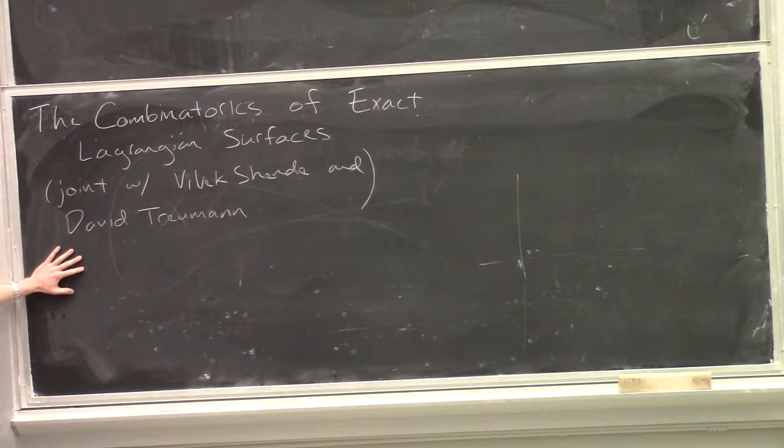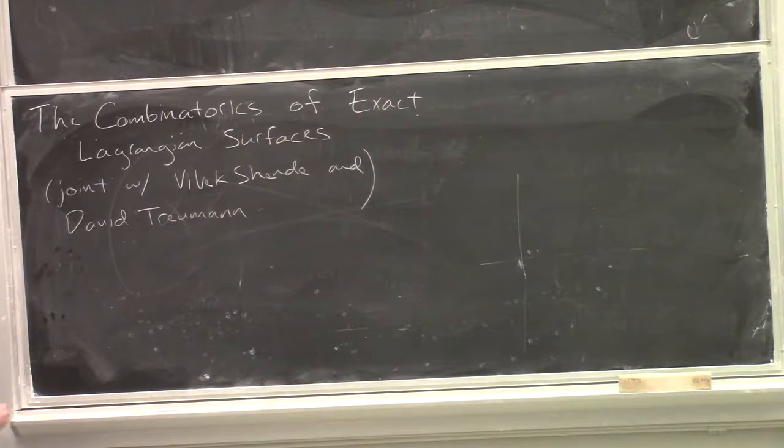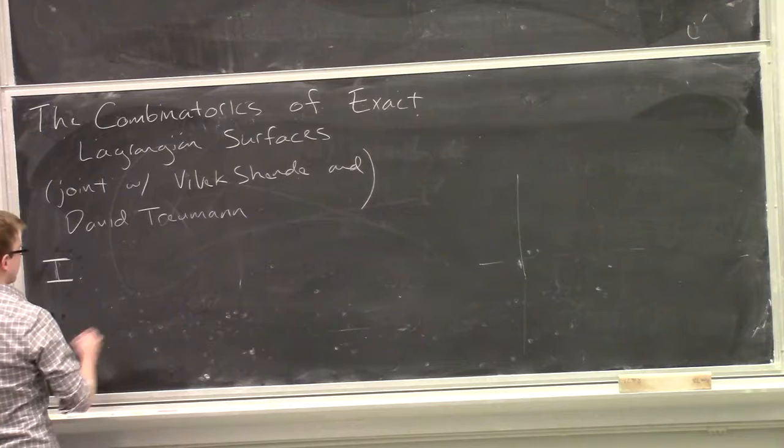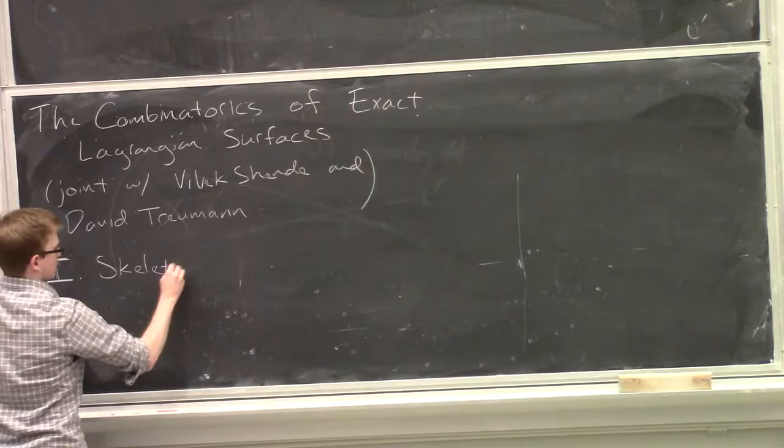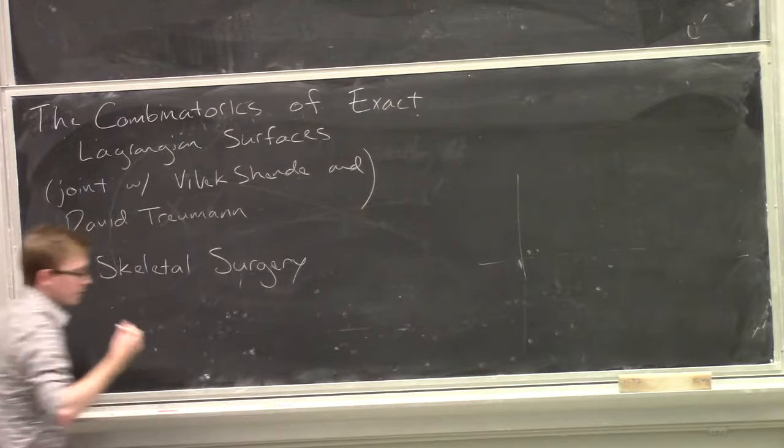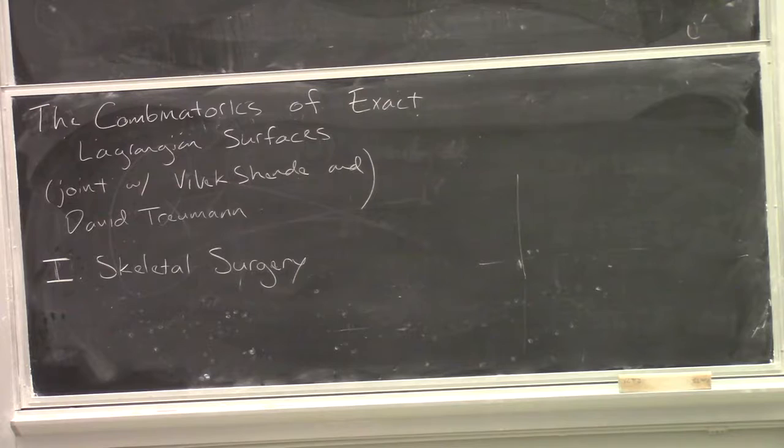One feature that came up about what is a cluster variety - it's something covered by a lot of tori. Under this dictionary, to understand those tori, what I need to understand are the Lagrangian surfaces, the exact Lagrangian surfaces. So I want to talk about how do you generate new exact Lagrangian components. I'll introduce and describe the notion of skeletal surgery.